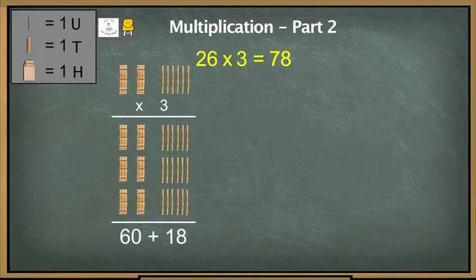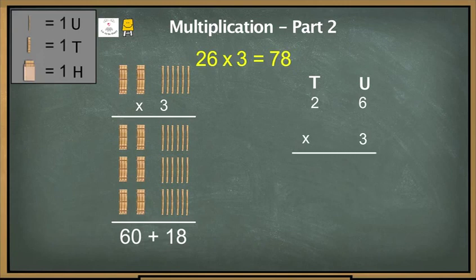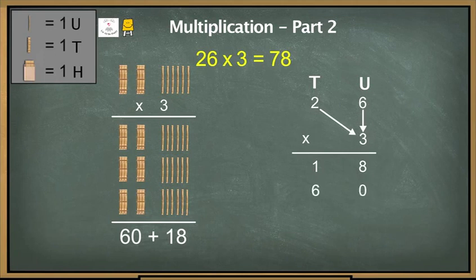Now let's look at this problem numerically. 26 is 2 tenths and 6 units. We need to multiply 20 and 6 by 3. 6 times 3 is 18. Now we need to multiply 20 by 3. 20 times 3 is 60. This means that 26 times 3 is 18 plus 60, which is 78.